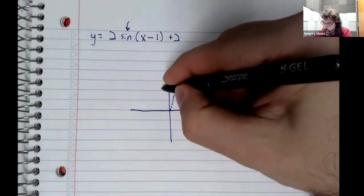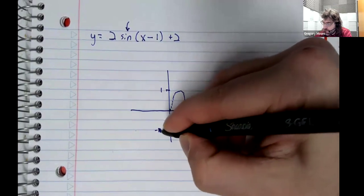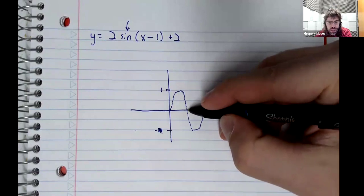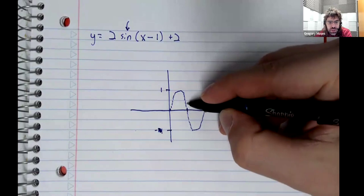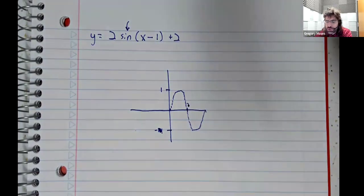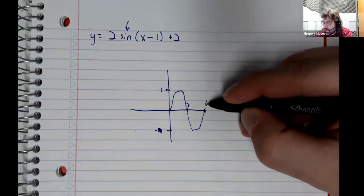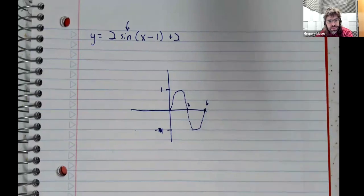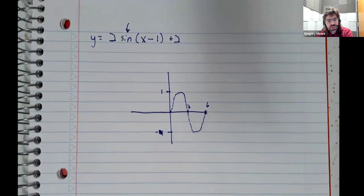This sine goes up to one and down to negative one. This point here is pi, but that's close enough to three if we're going to be working by hand. And this is about six.